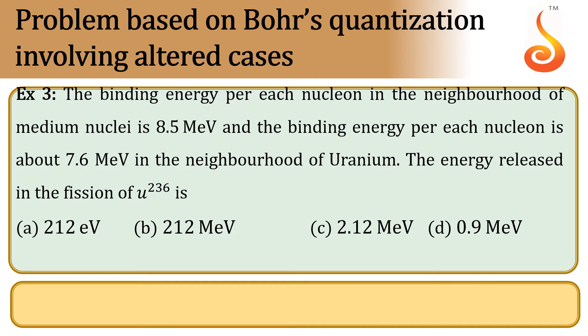In the fission reaction, uranium breaks into two medium nuclei. That means mass number is conserved, meaning the number of nucleons remains constant on the product and reactant side. Therefore, the energy released here is equal to the change in nuclear binding energy — whatever the binding energy changes is the amount of energy released during nuclear fission.